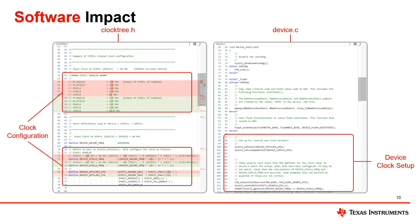The device.init file initializes the device and calls clocktree.h. Calling clocktree.h ensures setup of PLL control and clock dividers, clock sources, and all of the changes done by a user are implemented. These files are included in the initialization of the board to run the device at appropriate clocking speeds.